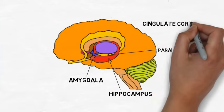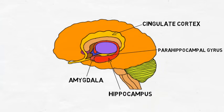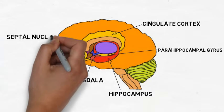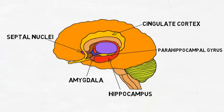The cingulate cortex, or cingulate gyrus, is found just above the corpus callosum and is involved in various aspects of emotion and memory. The septal nuclei have connections with a number of other limbic structures and are thought to be especially important to pleasure, reward, and reinforcement.